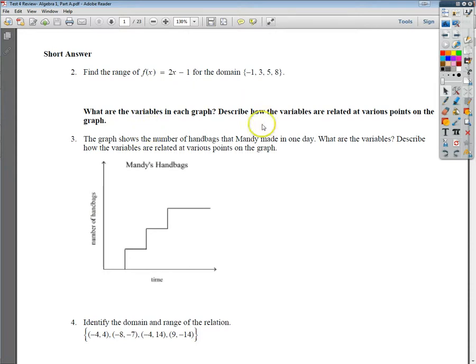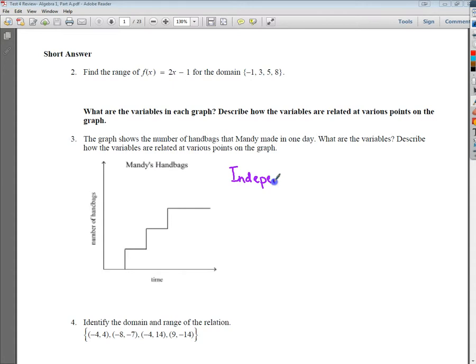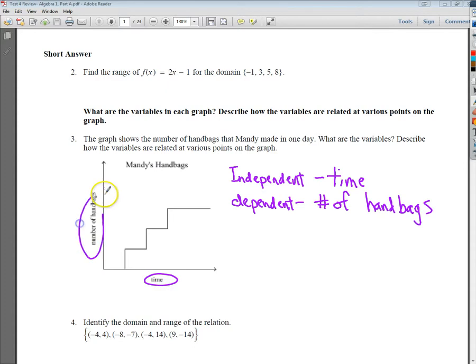Alright Adrian, let's look at number three, the first one you asked about. They want to know what are the variables for the graph and describe how they're related at various points on the graph. My variables - my independent variable is time. My dependent variable is number of handbags. I got that information by looking at the axis labels. Time is here, number of handbags.